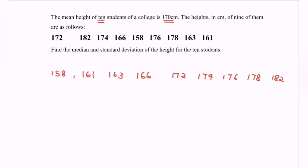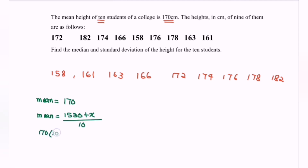Given the information, the mean equals 170. So the mean equals (158 + 161 + ... + 182 + x) / 10. We have the summation of the known 9 terms as 1530, plus x, over 10. Since we have 10 terms, letting the 10th term be x, we get 170 × 10 = 1530 + x. So rearranging: 1700 − 1530 = x.